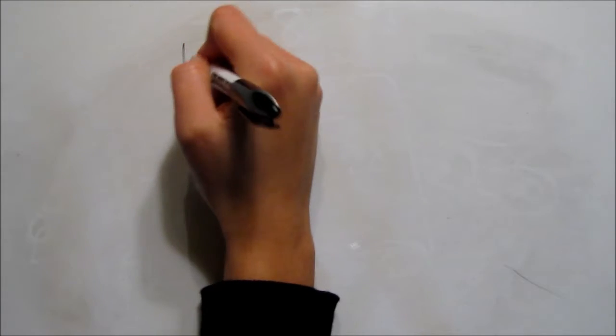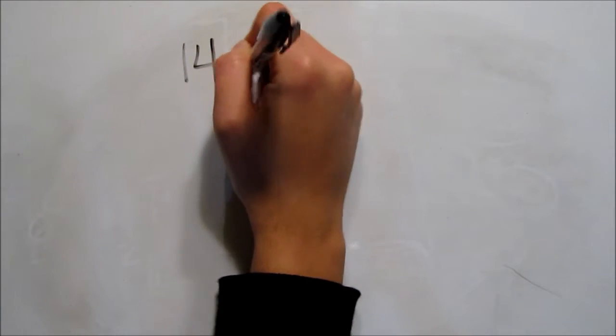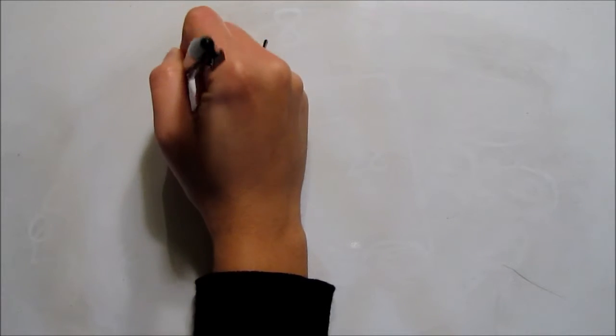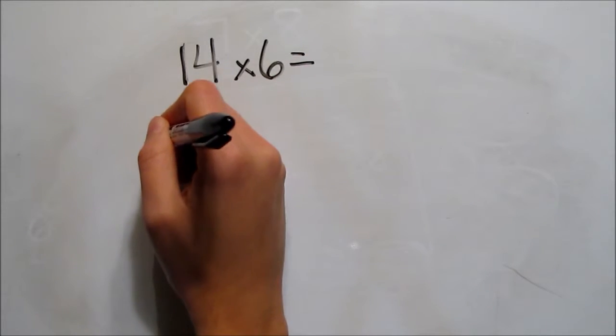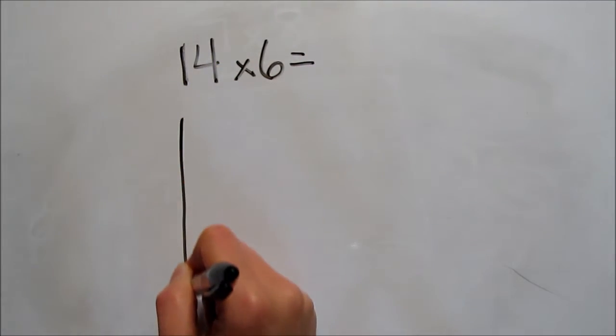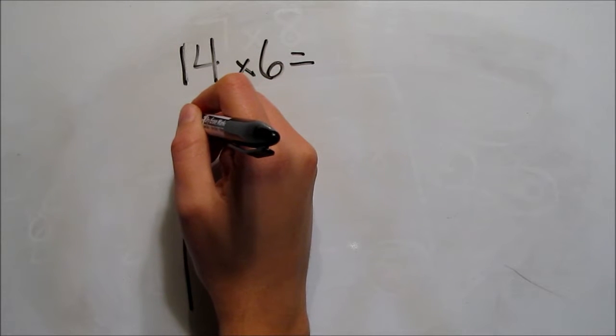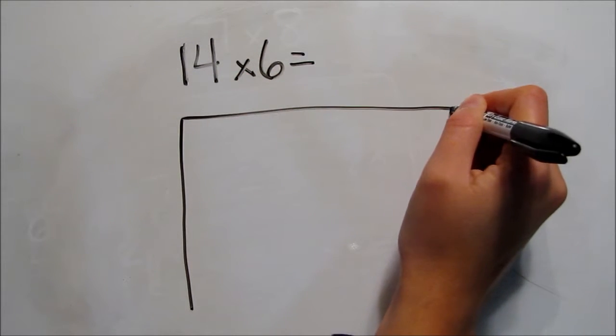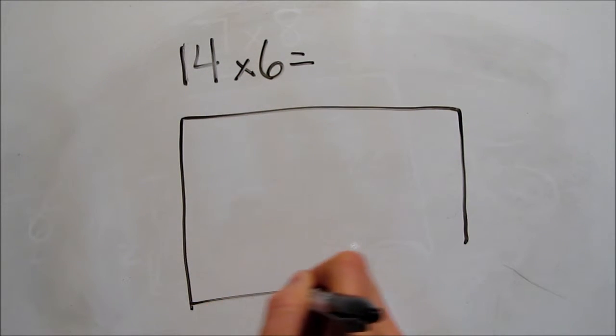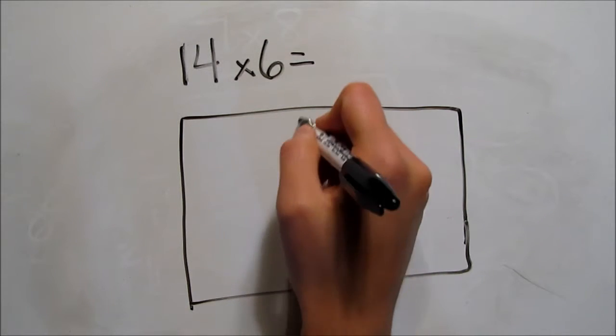Let's take a look at one more example, 14 times 6. We'll use these open arrays for multiplication facts we don't yet have memorized, but we'll also use them when we move on to multiplying two-digit times one-digit numbers. And for more information on that, there's a whole video that explains the steps in teaching two-digit times one-digit multiplication.